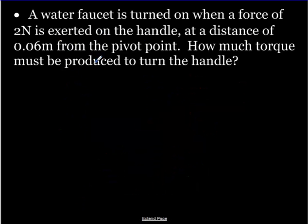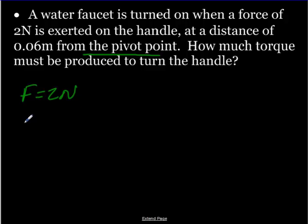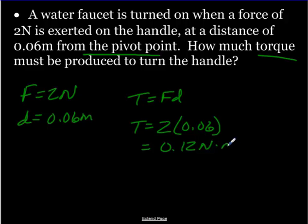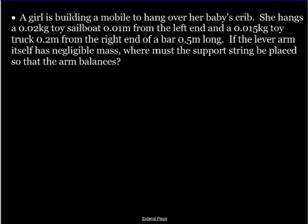Here I have a water faucet turned on with a force of 2 newtons, exerted on a handle at a distance of 0.06 meters from the pivot point — that's my lever arm. How much torque must be produced? Torque equals force times distance: 2 times 0.06 equals 0.12 newton meters. That's how much torque is produced.